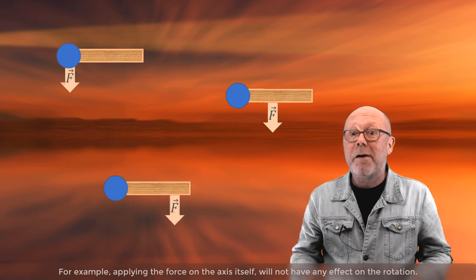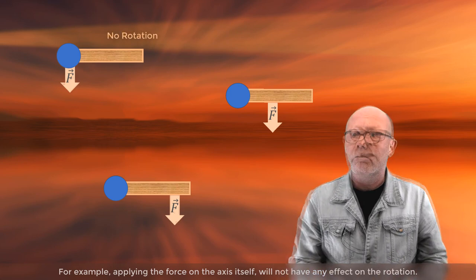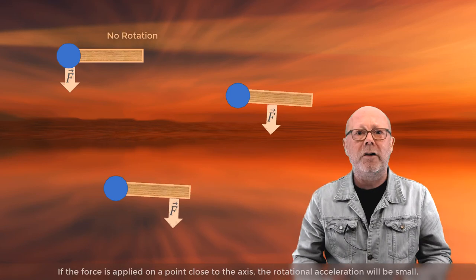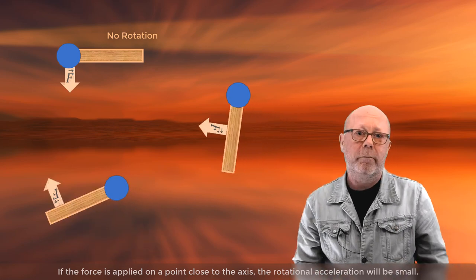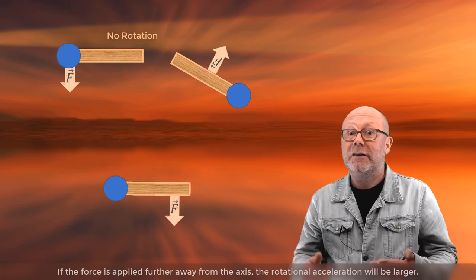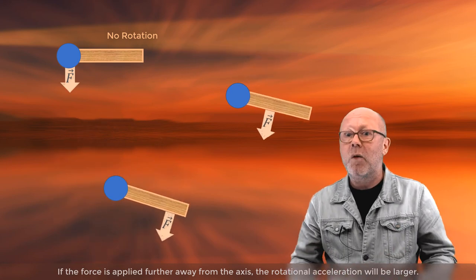For example, applying the force on the axis itself will not have any effect on the rotation. If the force is applied on a point close to the axis, the rotational acceleration will be small. If the force is applied further away from the axis, the angular acceleration will be larger.